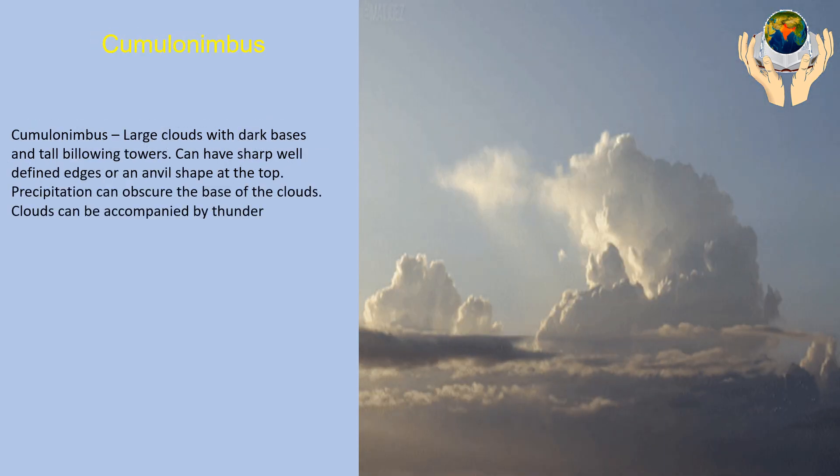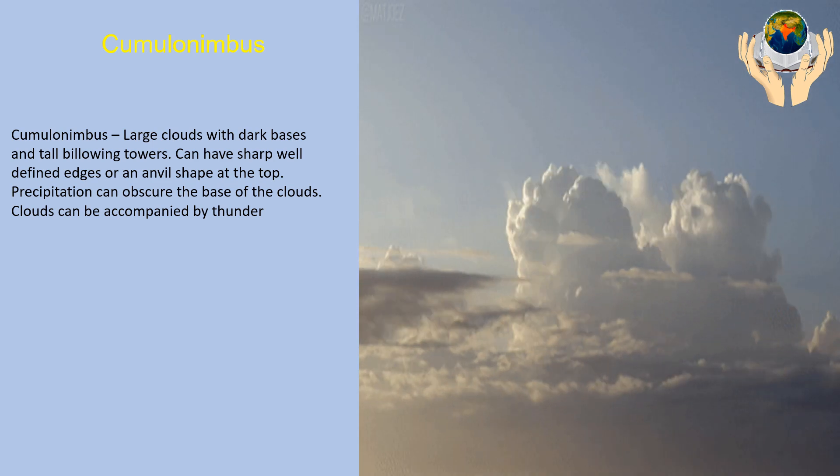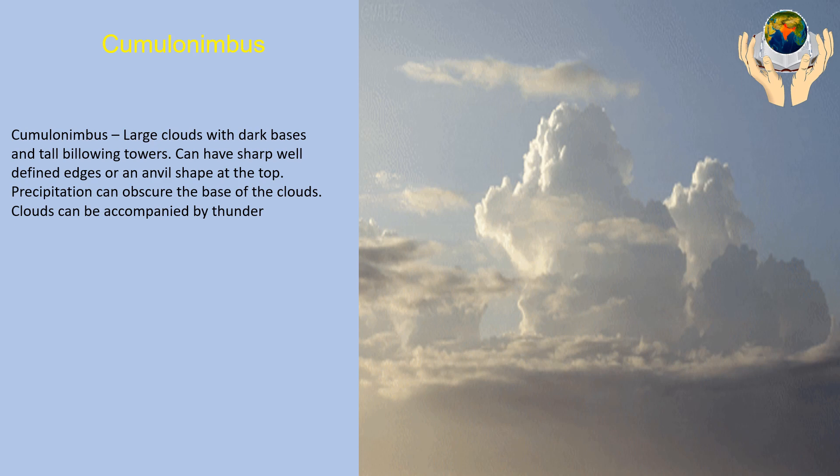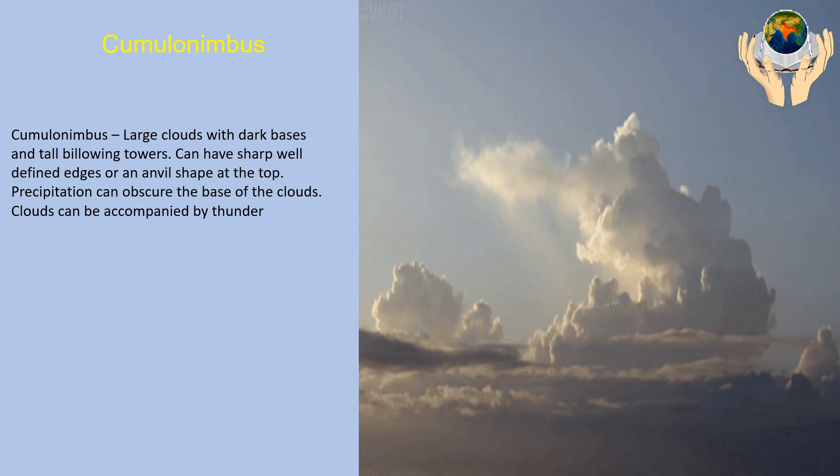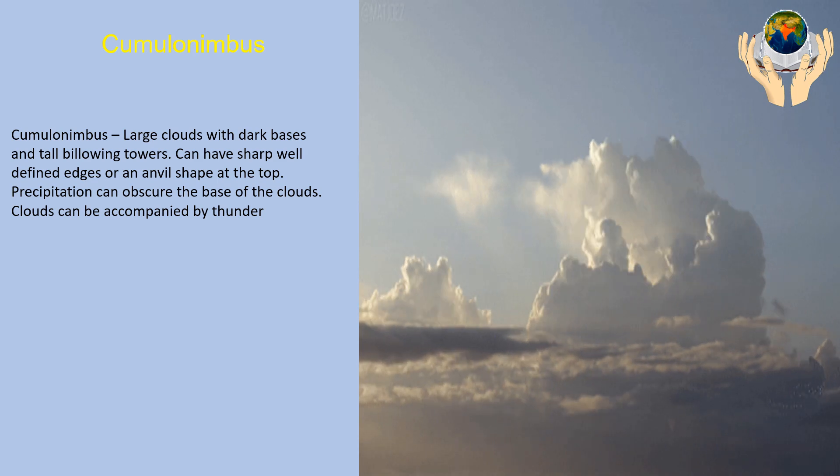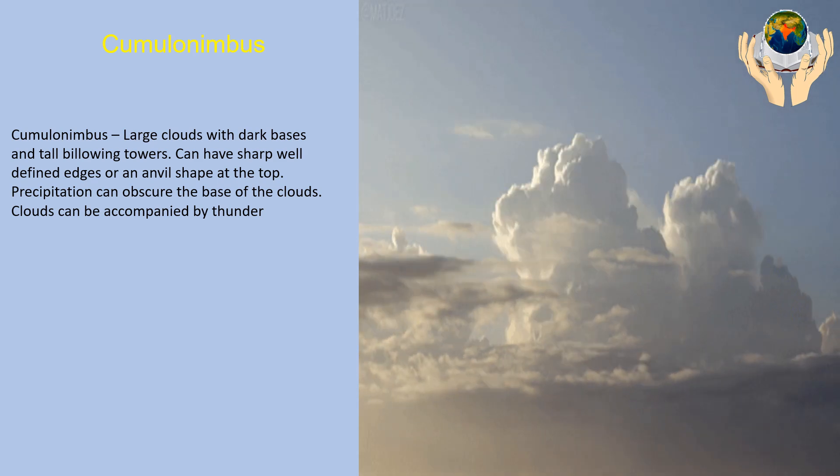Cumulonimbus. Cumulonimbus is a large cloud with dark bases and tall billowing towers. Can have sharp, well-defined edges or an anvil shape at the top. Precipitation can obscure the base of the clouds. Clouds can be accompanied by thunder.